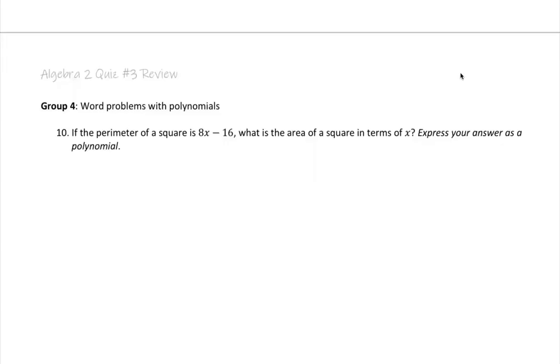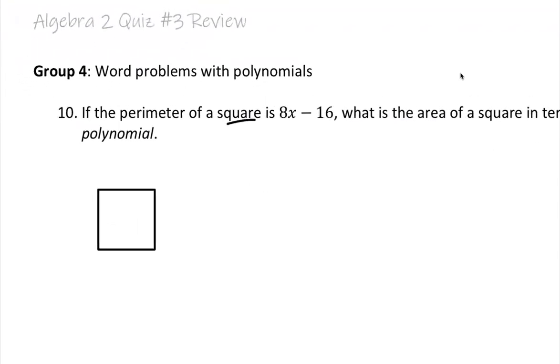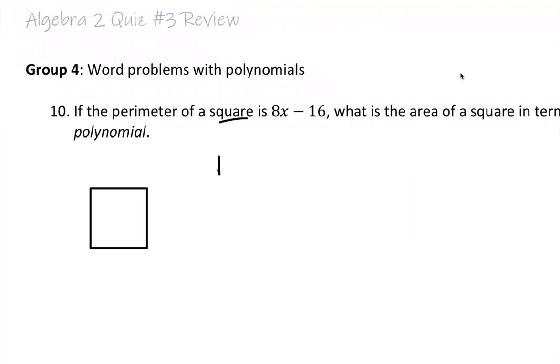All right, so we have a square. Now we have this problem back in our packet handout. So we're saying here that the perimeter is 8x minus 16. Now it's very simple if you are patient enough to understand what a perimeter is.